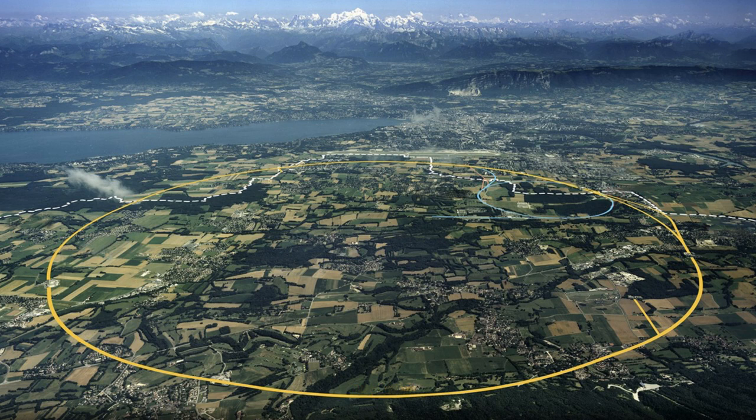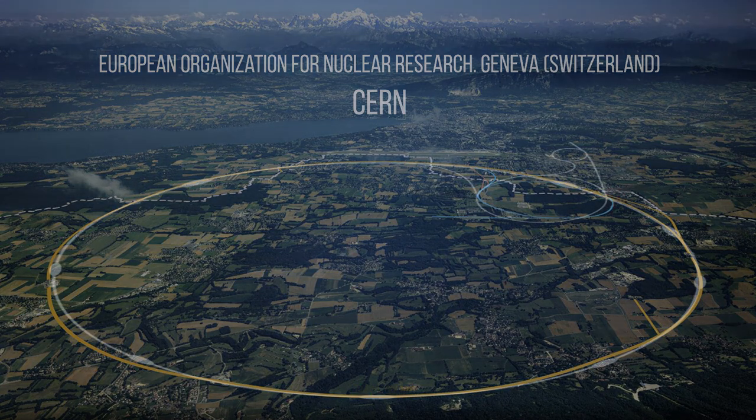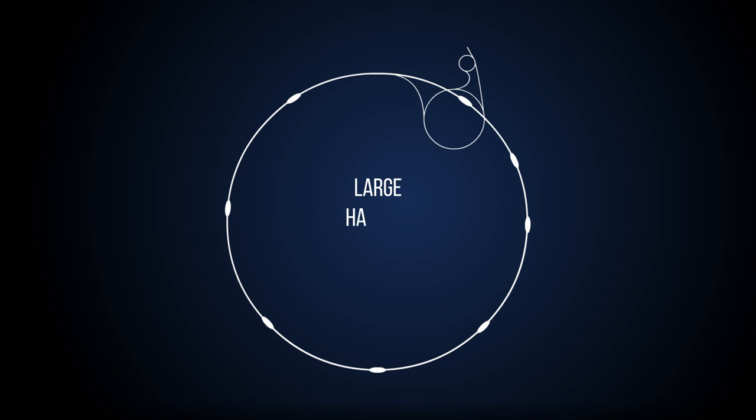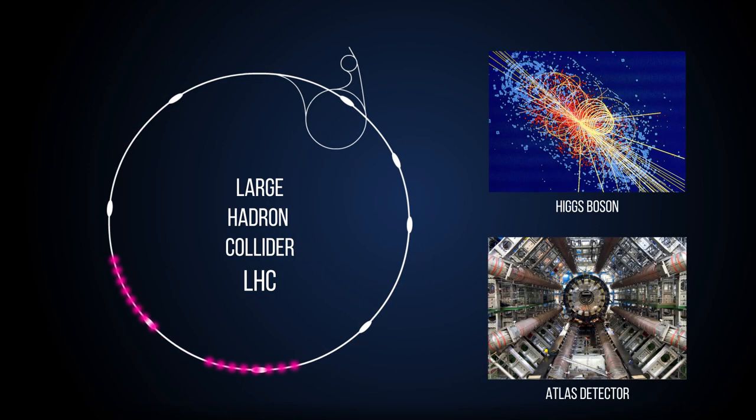The Large Hadron Collider is a one-of-a-kind facility in the International European Center for Nuclear Research, CERN. This collider allows accelerating particles, such as protons or heavy nuclei, up to an energy of 14 trillion electron volts. Such colossal energies, together with high temperatures, let us study the processes that occurred at the earliest stages of our universe's formation. In the experiments at the Large Hadron Collider, the Higgs boson was discovered.